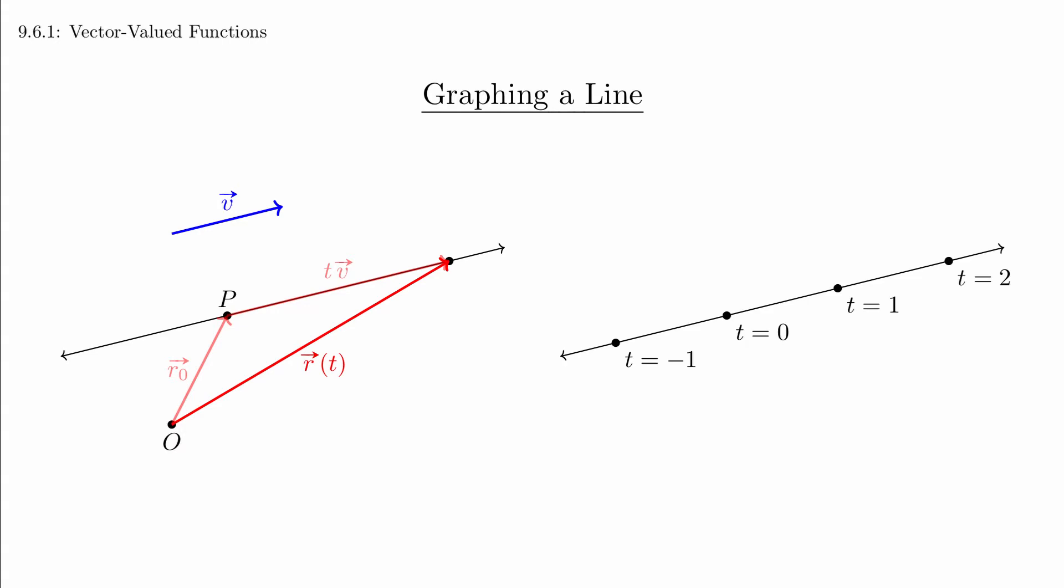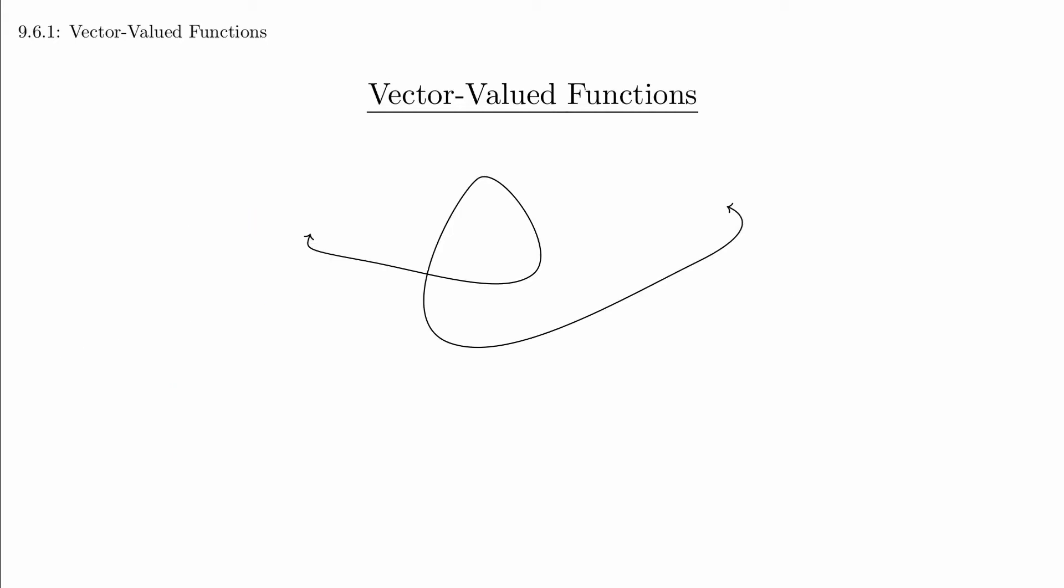When we were graphing lines, we thought of it as walking along a straight-line path at a fixed speed, but it doesn't have to be this way. For a general curve, the path we travel can go in different directions and can move at different speeds.